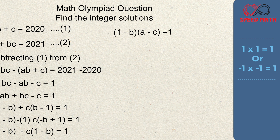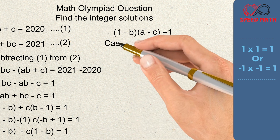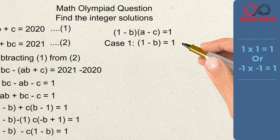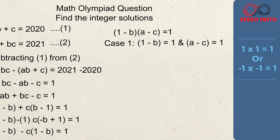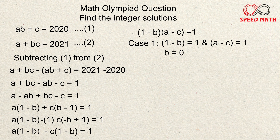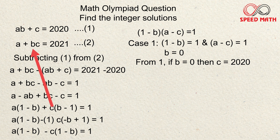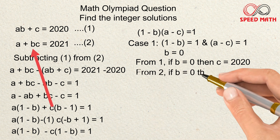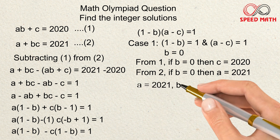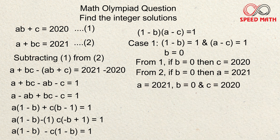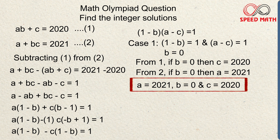Case 1: (1 − b) = 1 and (a − c) = 1. From the first bracket, b = 0. Substituting b = 0 into equation one, the ab term vanishes and we get c = 2020. Substituting b = 0 into equation two gives a = 2021. So one solution is a = 2021, b = 0, c = 2020.